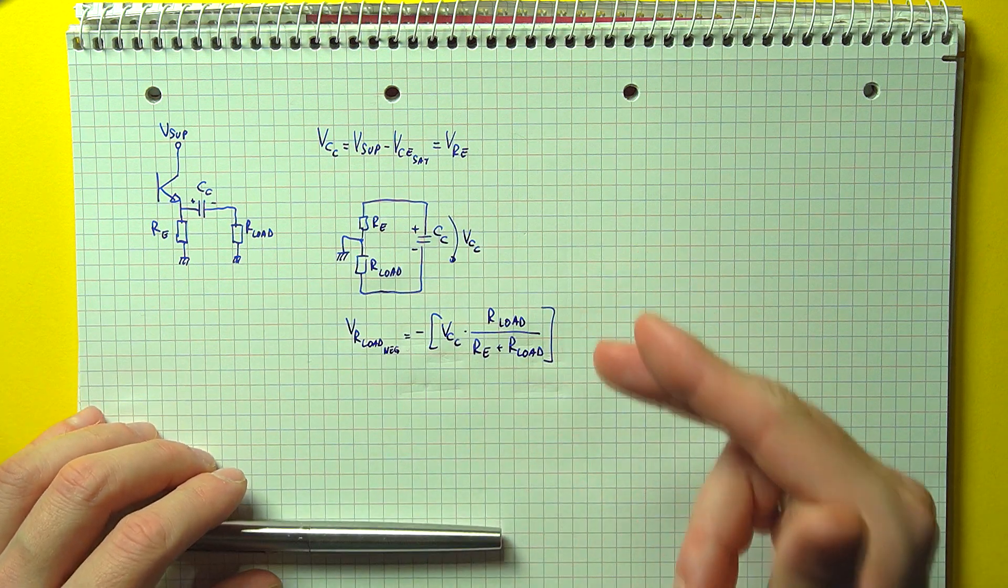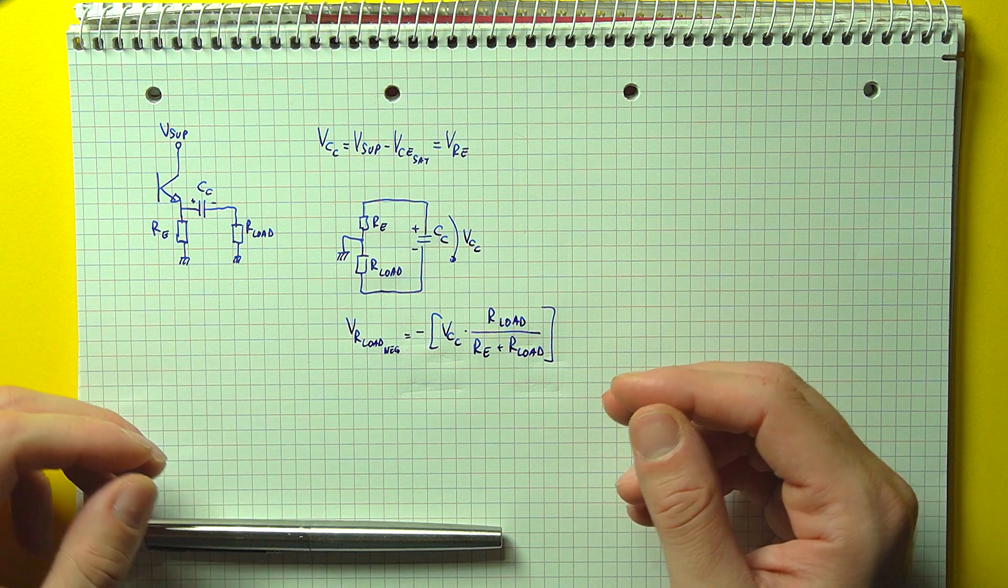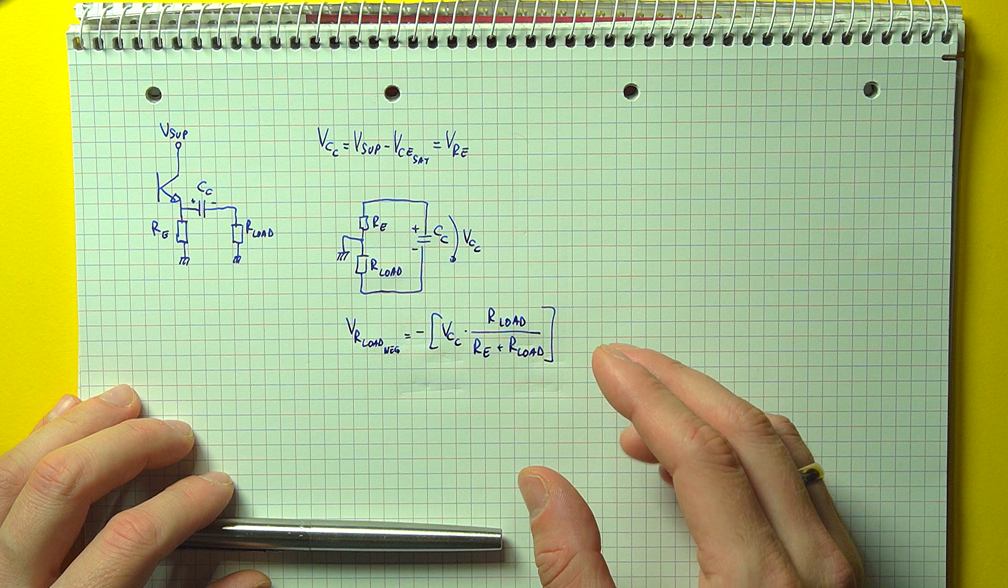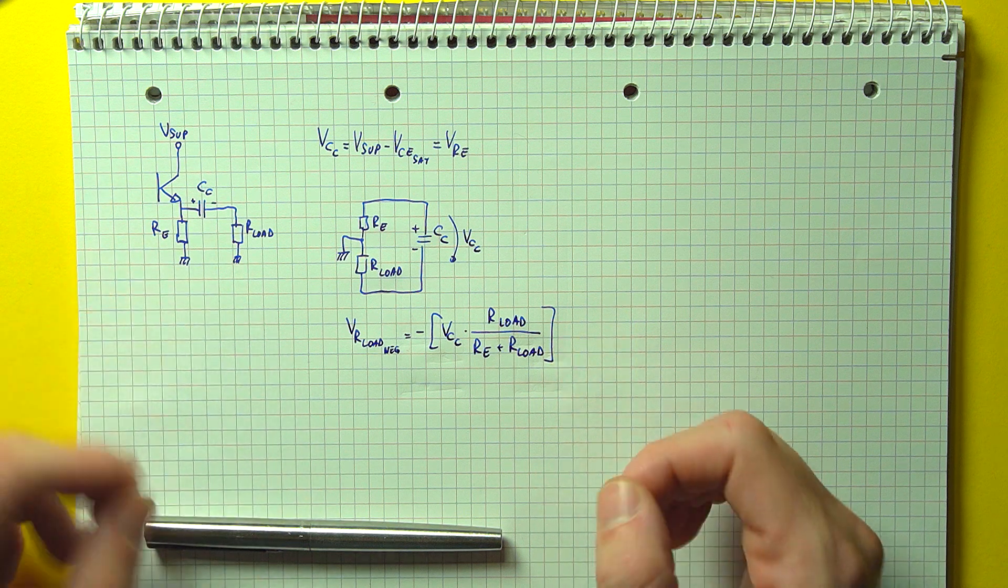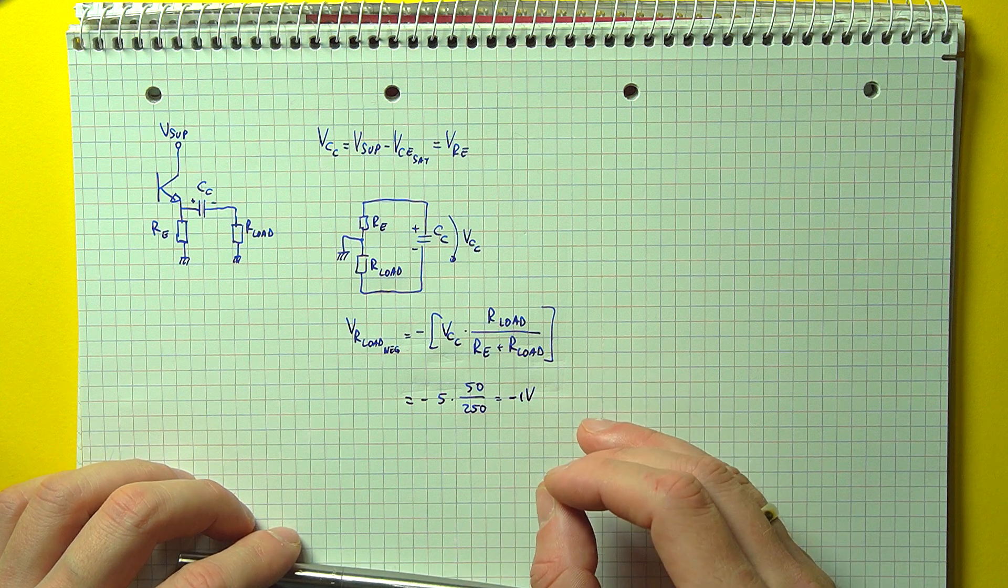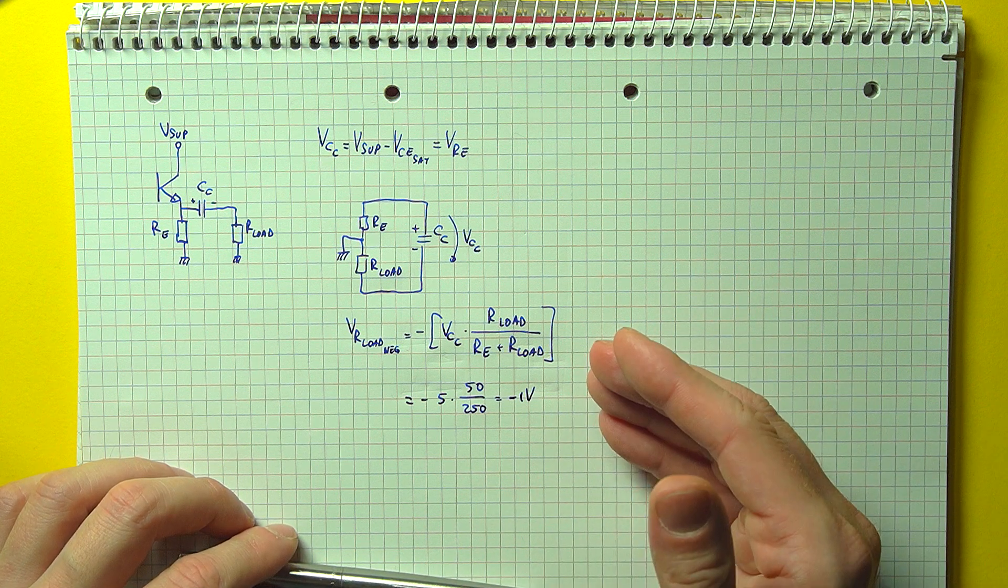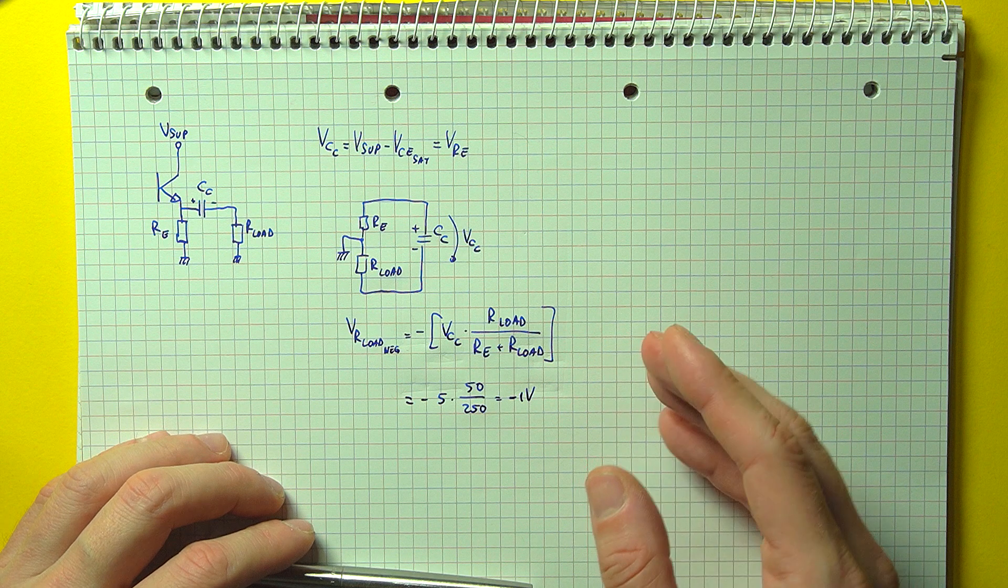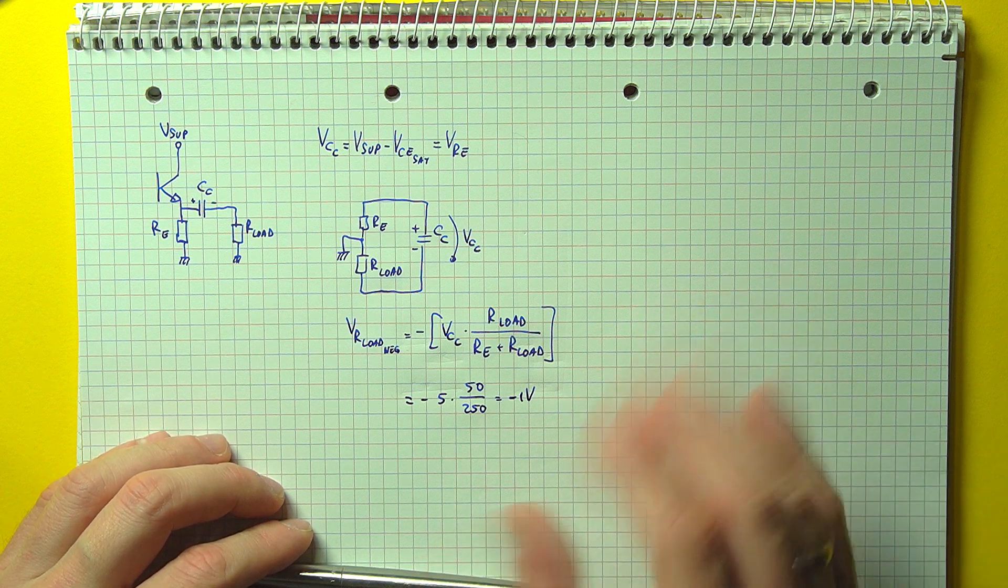Therefore the minimum voltage that can be present on the load resistor is dependent on the ratio between the load resistor and the emitter resistor, which in our case is about minus 1 volt. That is why our 1 volt input signal was amplified correctly, but the higher voltage ones were running into trouble.